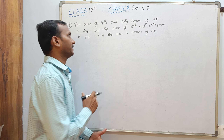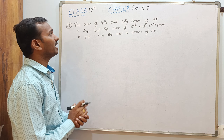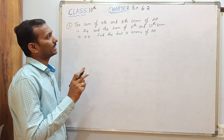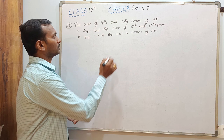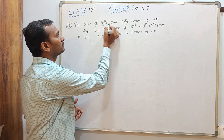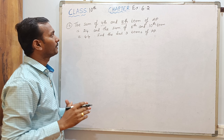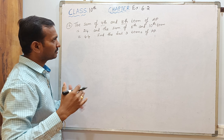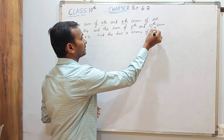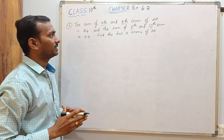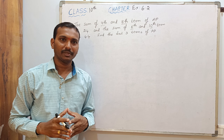Question number 16: the sum of the 4th and 8th term of an AP is 24, and the sum of the 6th and 10th term is 44. Find the first 3 terms of the AP.